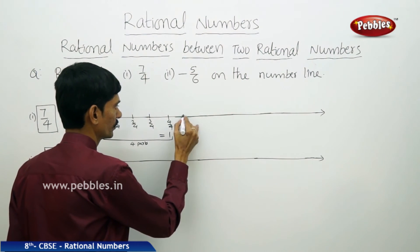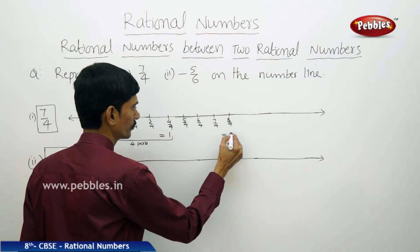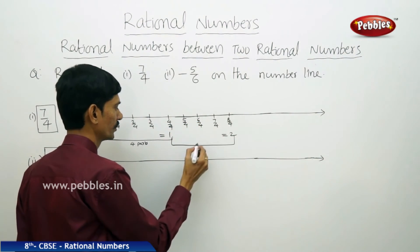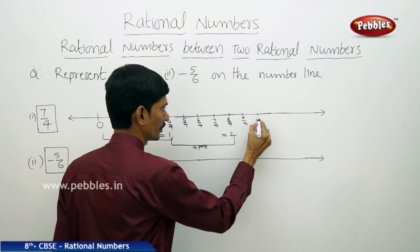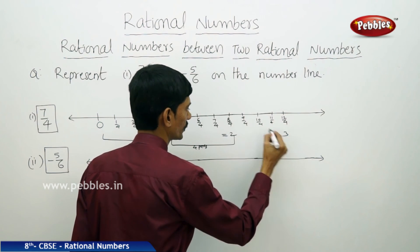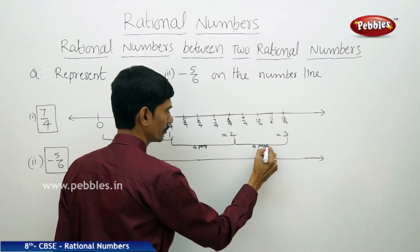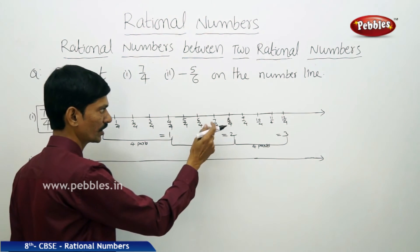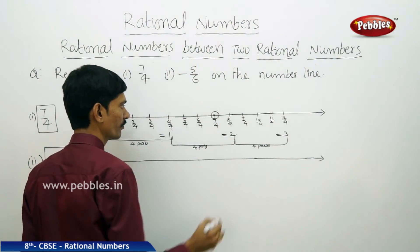Continuing: 5 by 4, 6 by 4, 7 by 4, 8 by 4. From 1 to 2, this is divided into 4 equal parts. Then 9 by 4, 10 by 4, 11 by 4, 12 by 4 equals 3. From 2 to 3 is also divided into 4 parts. So 7 by 4 is found between 1 and 2 on the number line. This is our required rational number.